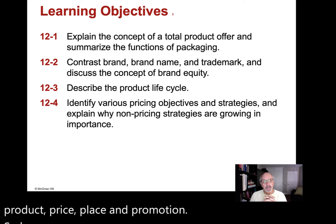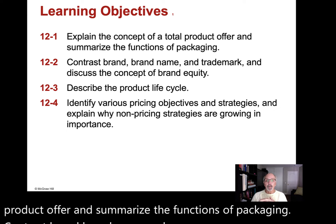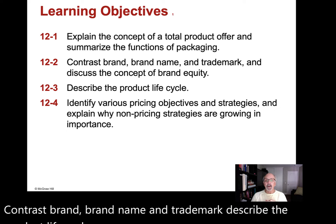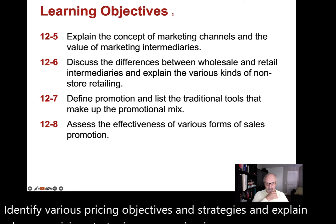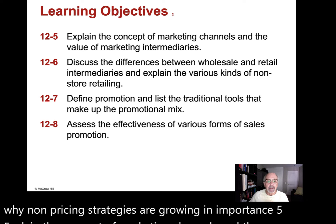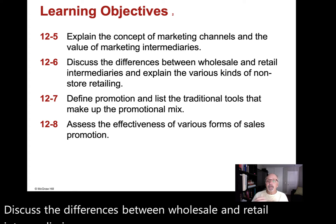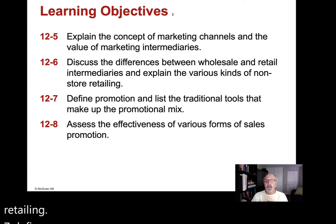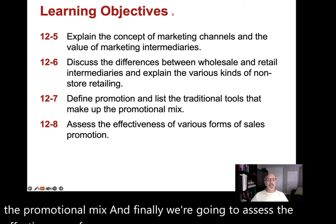Here are our learning objectives. Explain the concept of a total product offer and summarize the functions of packaging. Contrast brand, brand name, and trademark. Describe the product life cycle. Identify various pricing objectives and strategies, and explain why non-pricing strategies are growing in importance. Explain the concept of marketing channels and the value of marketing intermediaries. Discuss the differences between wholesale and retail intermediaries, and explain the various kinds of non-store retailing. Define promotion and list the traditional tools that make up the promotional mix. And finally, assess the effectiveness of various forms of sales promotion.